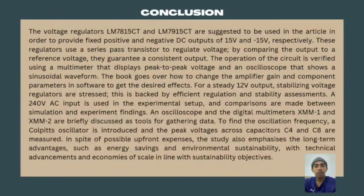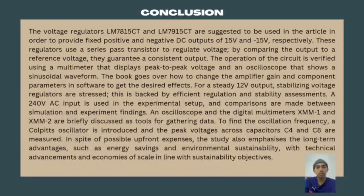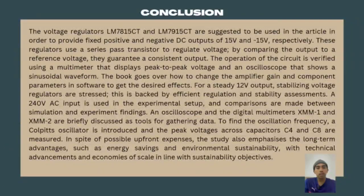Conclusion. The voltage regulators LM7815CT and LM7915CT are used to provide positive and negative DC outputs of positive 15V and negative 15V respectively. These regulators use a series pass resistor to regulate voltage by comparing the output to a reference voltage, guaranteeing a consistent output. The operation of the circuit is verified using a multimeter that displays peak-to-peak voltage, and an oscilloscope that shows a sinusoidal waveform. The software allows adjustment of amplifier gain and component parameters to achieve the desired effects, with stabilizing voltage regulators stressed for a steady 15V output.